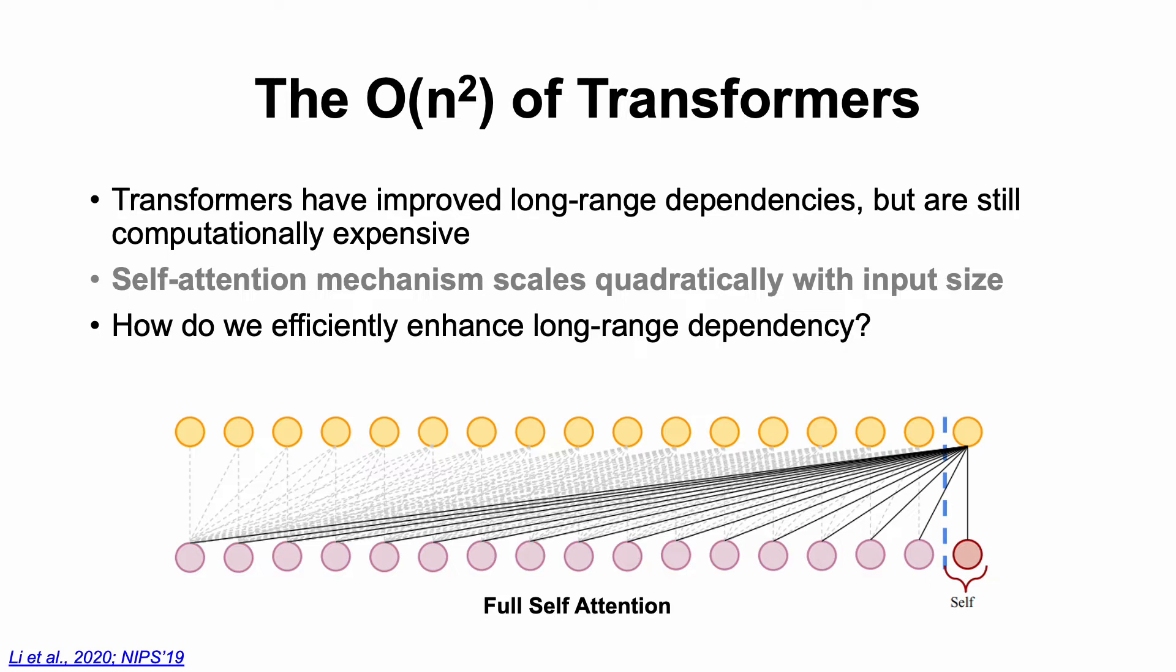We know that transformers have generally improved long-range dependencies due to the attention mechanism, but when we consider even longer sequence lengths, for example in contexts like genomics or extremely long texts, they don't scale very well. This is largely due to the quadratic self-attention complexity, which is resource intensive. The time that it takes to calculate attention quadratically grows with each new data point that you add to a series.